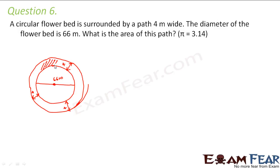So how do we find the area of this path? We will find the area of the bigger circle and then subtract the area of the smaller circle from the bigger circle. That is how we will do it.